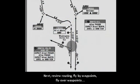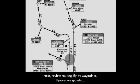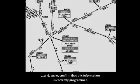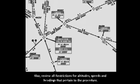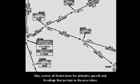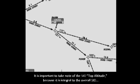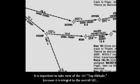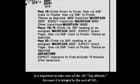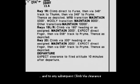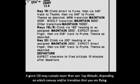Next, review routing, fly-by waypoints, fly-over waypoints, and confirm that this information is correctly programmed. Also review all restrictions for altitudes, speeds, and headings that pertain to the procedure. It is important to take note of the SID top altitude because it is integral to the overall SID and to any subsequent climb via clearance. A given SID may contain more than one top altitude, depending on which runway and/or transition you are flying.